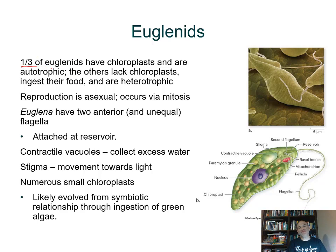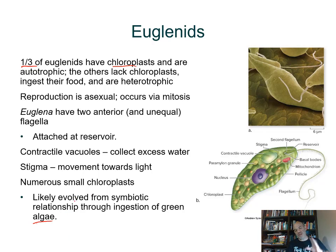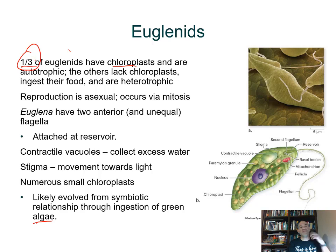Looking at the free-living euglenins: the chloroplast is acquired through a symbiotic event. Only about a third of the free-living euglenins have chloroplasts. It seems that one line of euglenins, when evolving early on, had none. Then they ingested an alga — so this is secondary endosymbiosis, because the alga already possessed a chloroplast. So you have the initial endosymbiosis to make the green alga, and then another eukaryote ingest that to produce these euglenins.